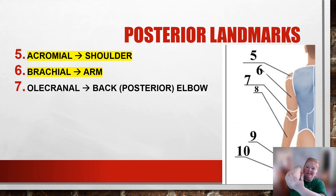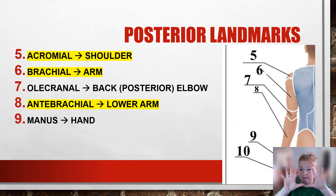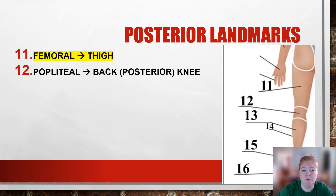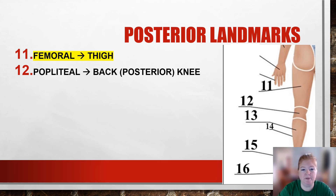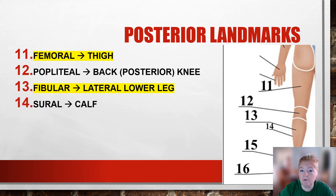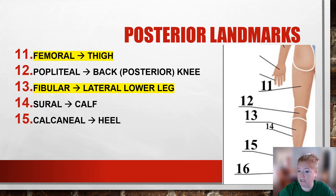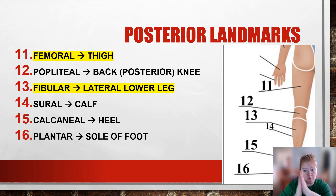On the posterior view, we have olecranon — that's the point of your elbow, which you can injure someone with. We have manus, which is your hand. Popliteal is one of my favorites — that's the back or posterior part of the knee. Sural is your calf — remember crural was on the front for your shin; sural is your calf, like it sure hurts if you climb a lot of stairs. Calcaneal is your heel.